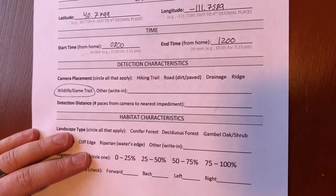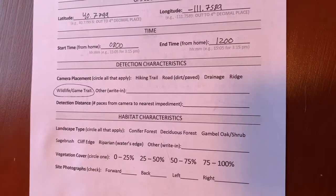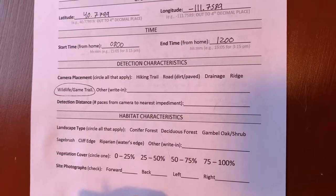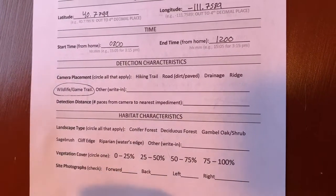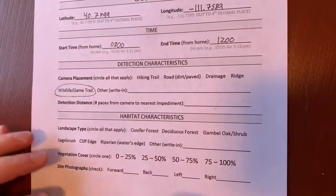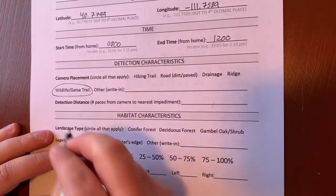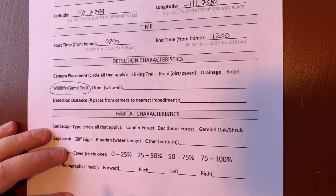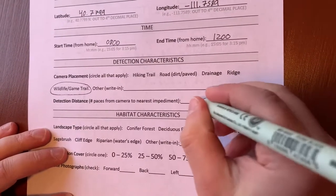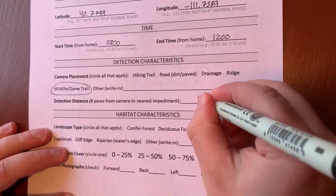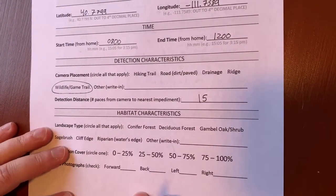Detection distance — this is going to be pretty arbitrary. You don't have to actually measure it out with a tape measure or anything. It's more just to make sure that you're giving the camera enough room to actively see what's going on in the area. You're really going to just kind of walk this off until you run into something that would impede the view of the camera. So we'll say that we walked off about 15 paces or so until we ran into something — go ahead and record that.